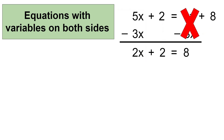So now we have an equation with a variable on one side. Remember, the goal is to isolate the variable, meaning we need to get the variable by itself. So we need to get rid of the coefficient 2 and the constant 2. To do this, we need to do reverse order of operations, which means we first need to remove the constant 2.